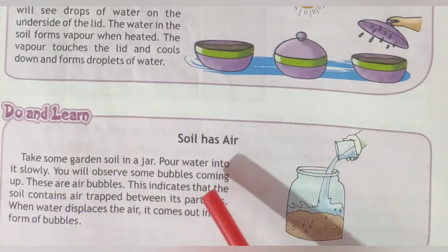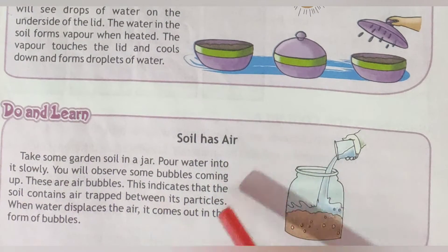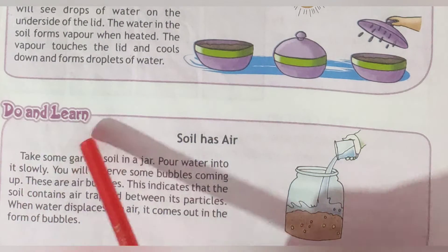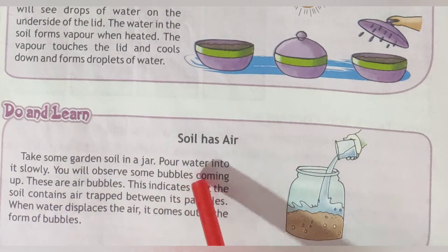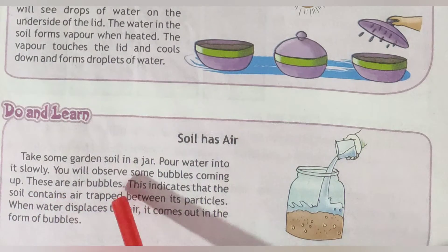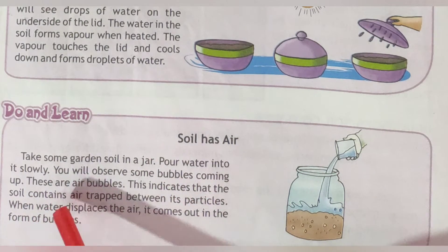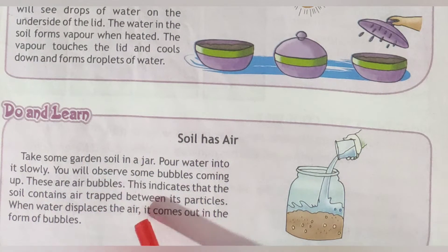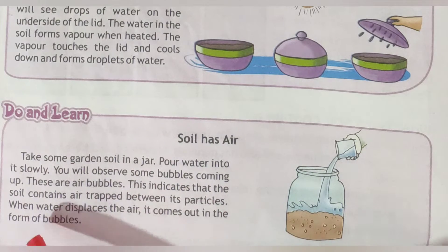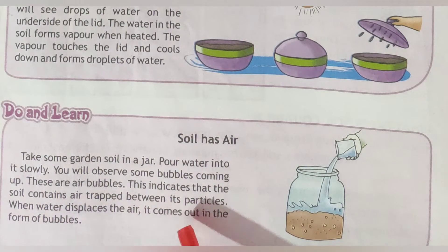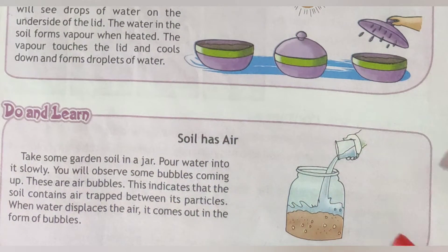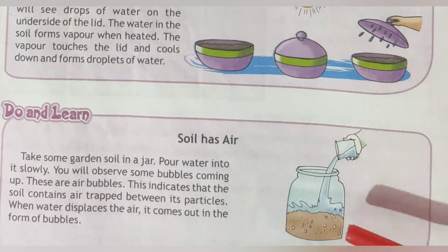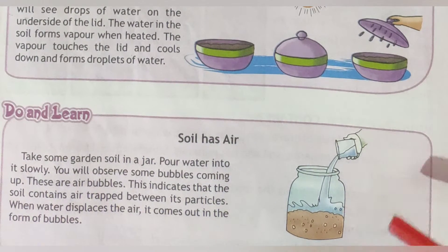Yes, soil has air. To understand this, we do a small practical. Take some garden soil in a jar and pour water into it slowly. You will observe some bubbles coming up — these are air bubbles. This indicates that the soil contains air trapped between its particles. When water displaces the air, it comes out in the form of bubbles.